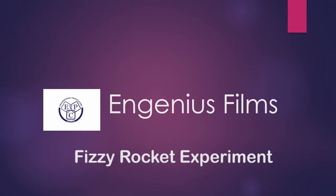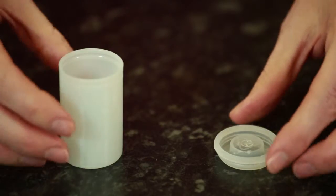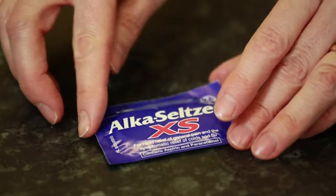For all budding rocket engineers, here's how you can experiment with your own fizzy rocket. All you need is a film canister like this and an effervescent tablet or a fizzy tablet like an Alka-Seltzer.